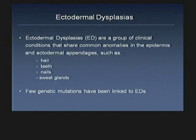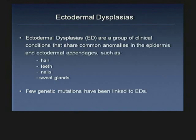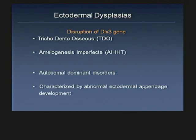Defects in these ectodermal appendages or anomalies in the epidermis are characteristic of a group of clinical conditions called ectodermal dysplasia. Besides defects in hair, teeth, and epidermis, patients can also present defects in nails and sweat glands. We have focused our work for almost a decade on a transcription factor gene called DLX3, in which mutations have been linked specifically to ectodermal dysplasias called trichodento-osseous syndrome (TDO) and amelogenesis imperfecta with hypomaturation-taurodontism (AIHHT).